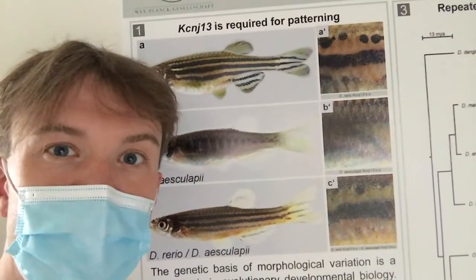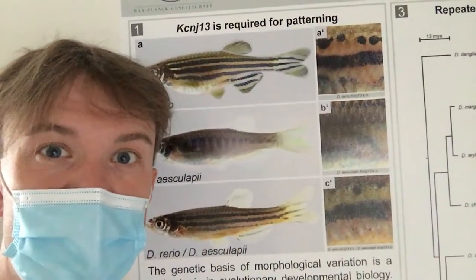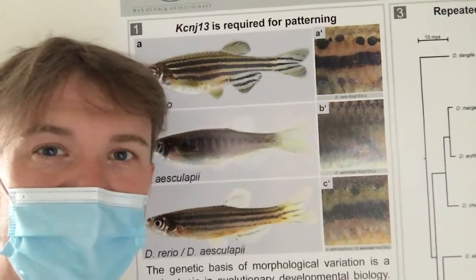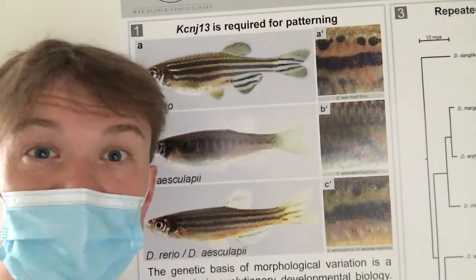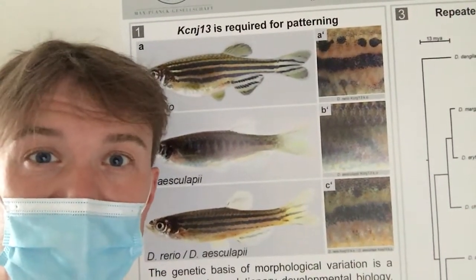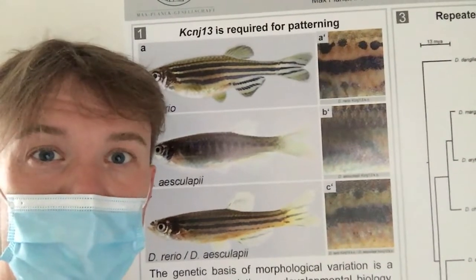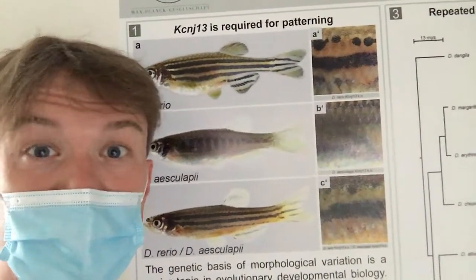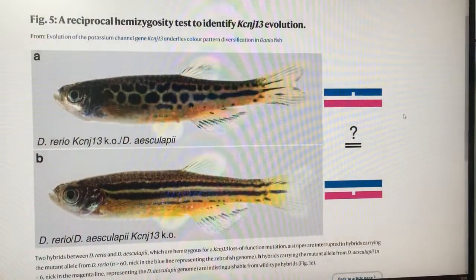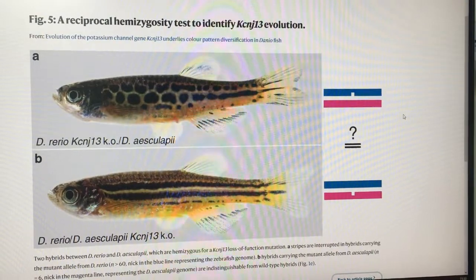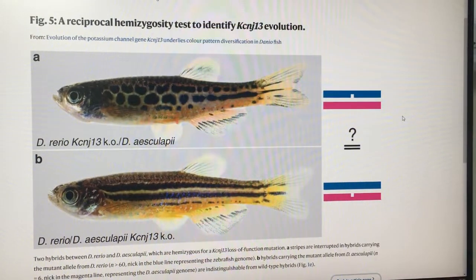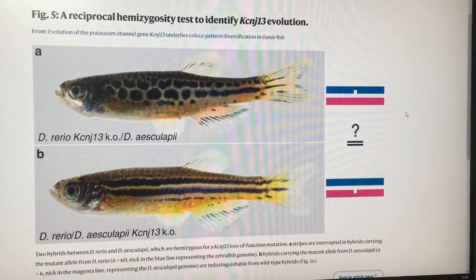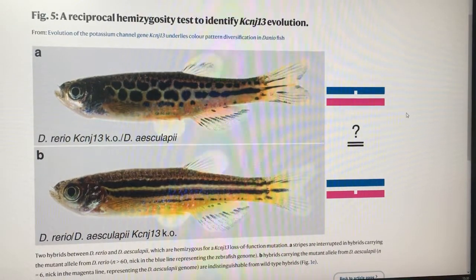If we make mutants in a potassium channel gene called KCNJ13, or Obelix, then we get a phenotype in zebrafish and also in Danio esculapii. Both genes are required for color pattern development in both species. By using a so-called reciprocal hemizygosity test in hybrids, we recently found that this gene evolved between the two different species.